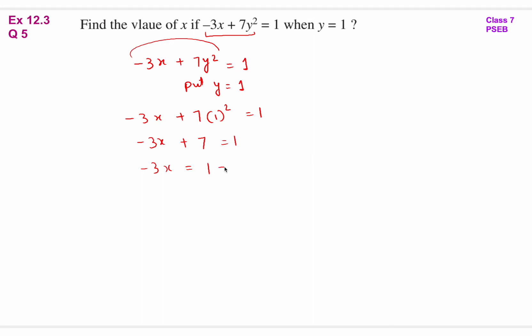So -3x = 1 - 7. Shift +7 to right hand side, this will be -7.